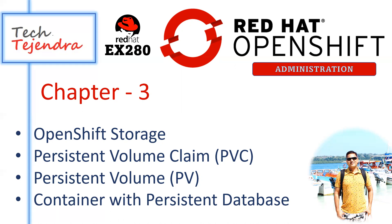Whatever data we are storing inside the container will be removed as soon as the container is removed from the cluster. You need to understand that container storage is very volatile in nature. In the cluster environment — the OpenShift cluster environment — creation of pods and containers is very dynamic. At any time, if the cluster feels the pod or container is not in good health, it can stop that pod and spawn a new one. That's why whatever data we store inside the container will also be removed as soon as the container is stopped. That's why we need to find a way to make the data persistent.